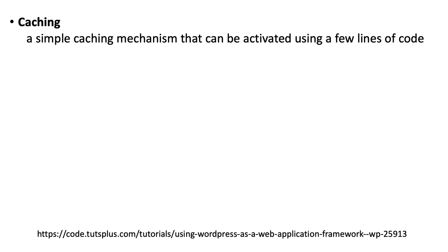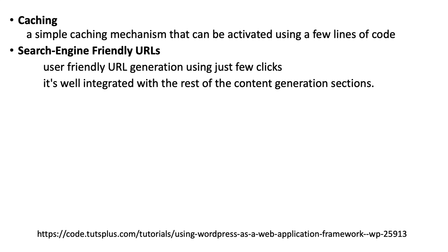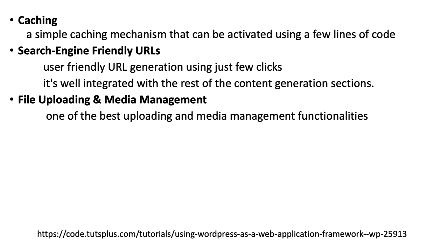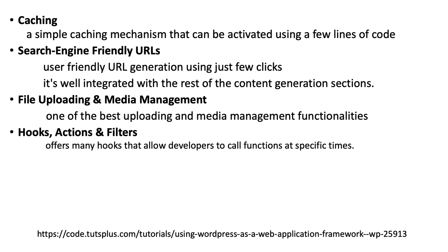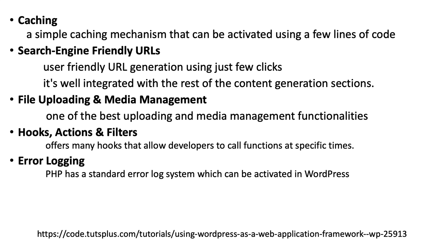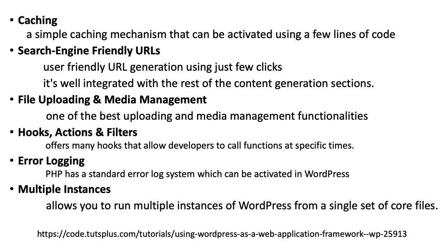WordPress has a simple caching mechanism you can turn on with a few lines of code, and caching helps high-demand websites work better. The search engine friendly URLs it generates are friendly, and because there are so many WordPress sites, search engines spend extra effort to do justice to WordPress sites. File uploading and media management are among the best in the business. Its hooks, actions, and filters offer many ways for developers to call functions at specific times. It has really good error logging, well integrated with PHP to turn off and activate PHP's error logging, and it supports multiple instances really well.